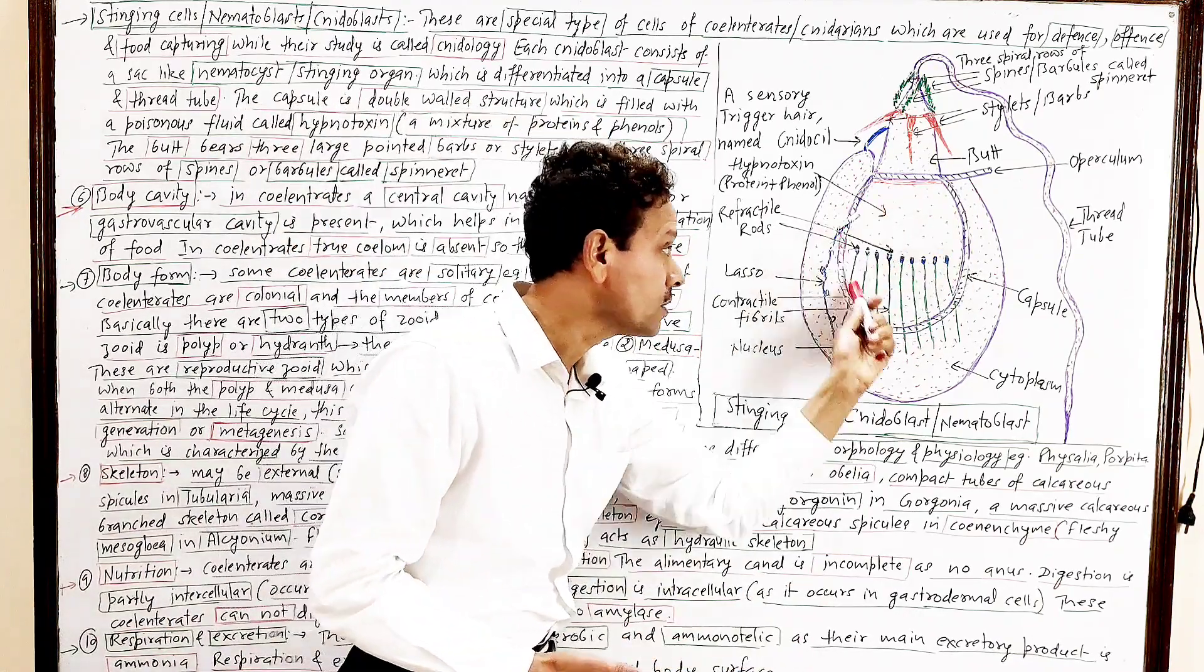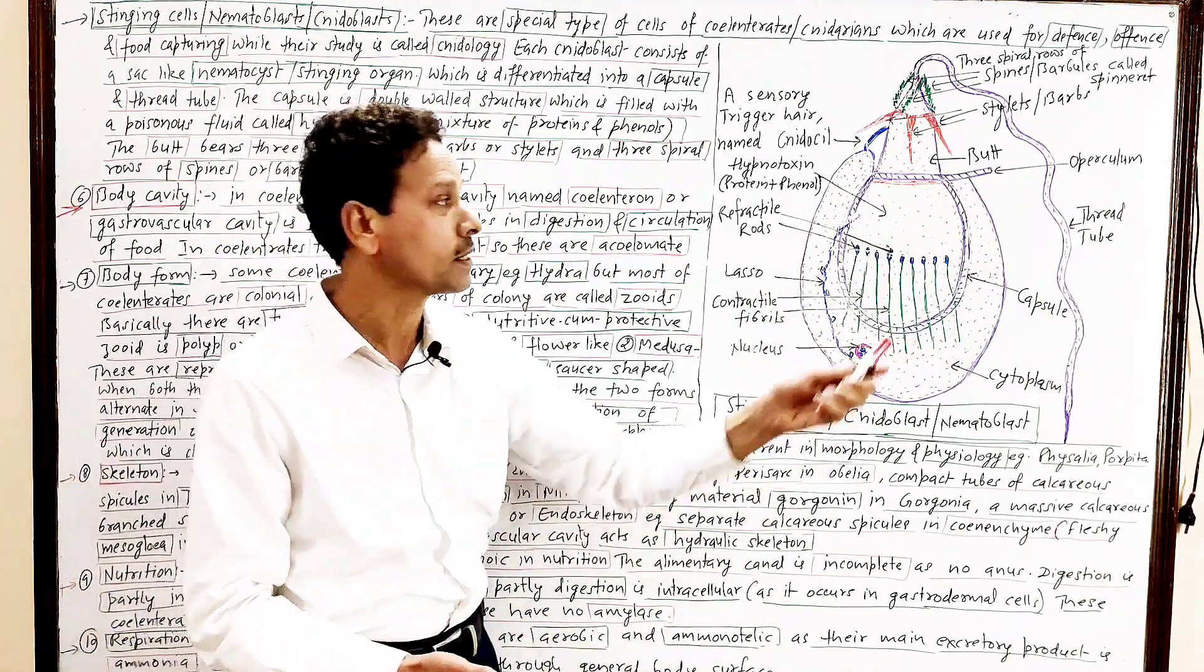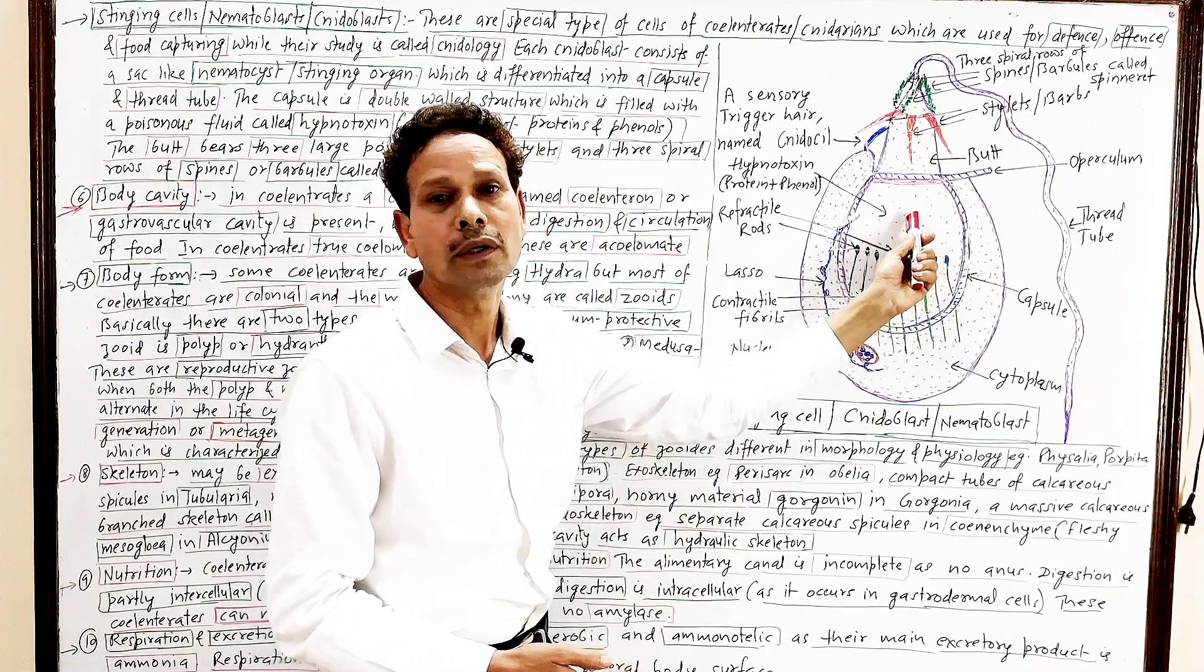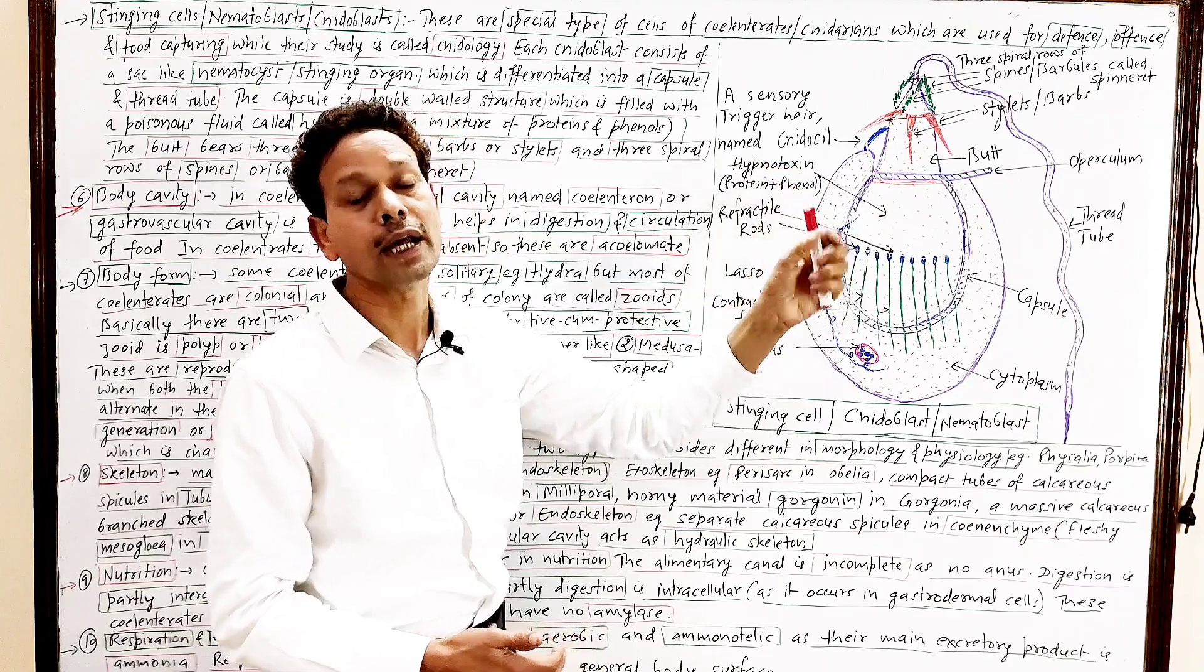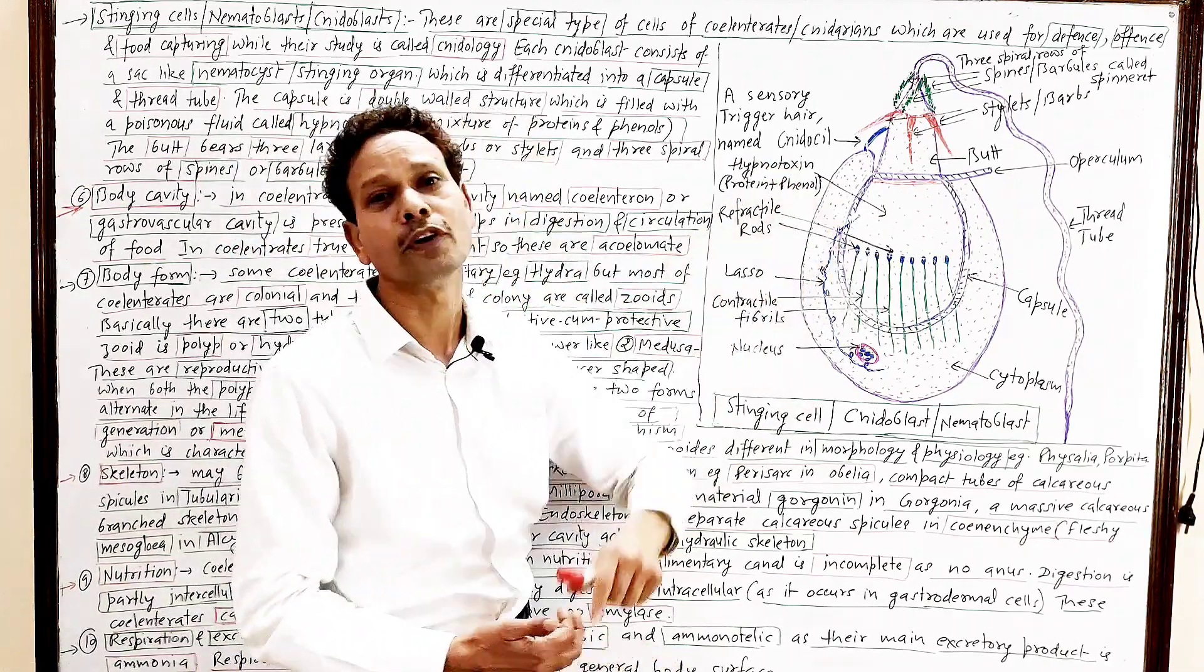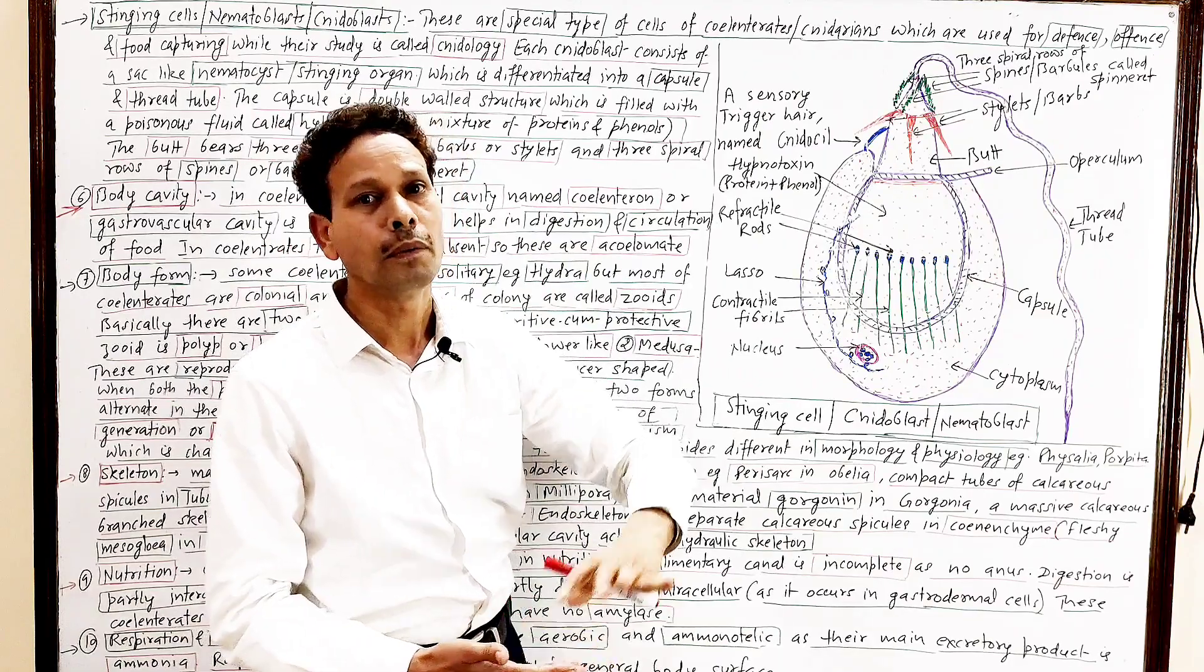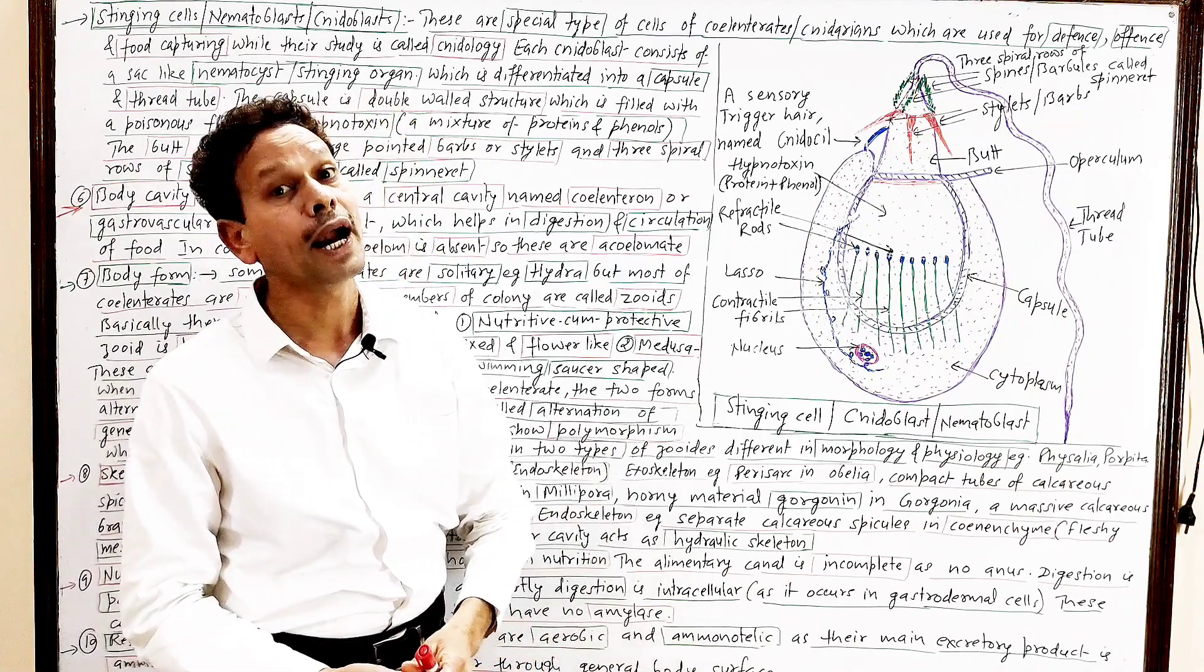And this entire structure capsule, that is filled with a poisonous substance, and that poisonous substance is hypnotoxin. That is a poisonous substance which is a mixture of proteins plus phenol, and this poisonous substance is injected into the body of prey through this elongated thread-like structure, that is thread tube.